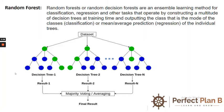So talking about random forest, random forest or random decision forests are an ensemble learning method for classification, regression, and other tasks that operate by constructing a multitude of decision trees at training time and outputting the class that is the mode of the classes or mean average prediction of the individual trees.